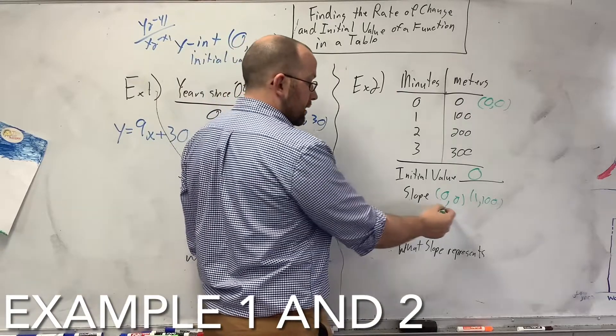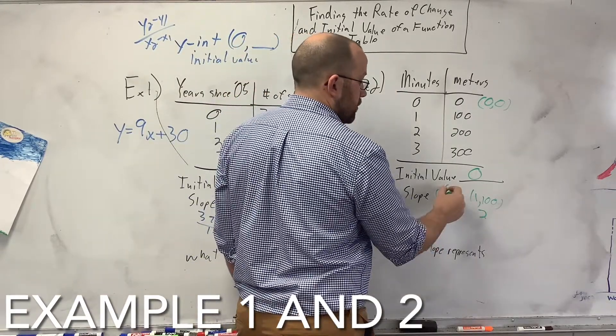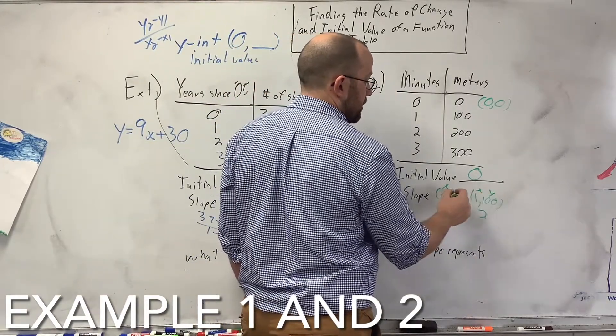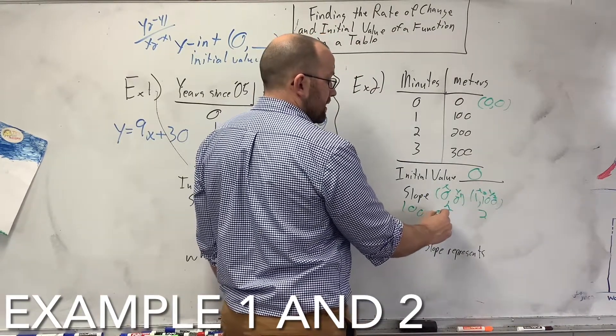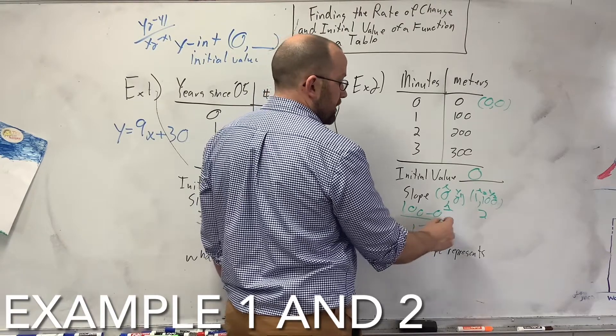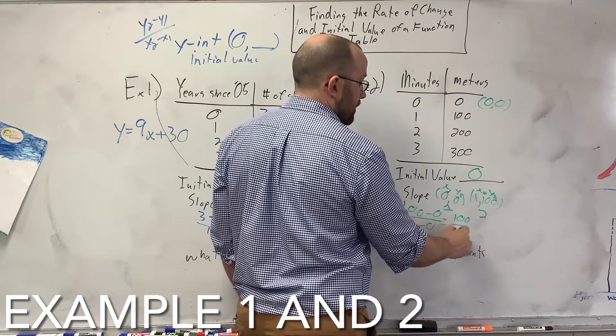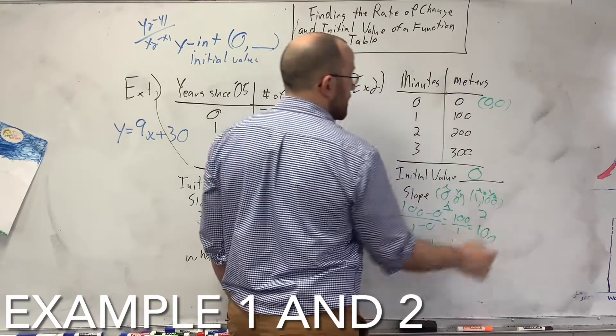I'm going to call this 1, 2, x, y, x, y, 1, 1, 2, 2. So, I'm going to go 100 minus 0 over 1 minus 0. You get 100 over 1, which is 100. But what does my slope represent?